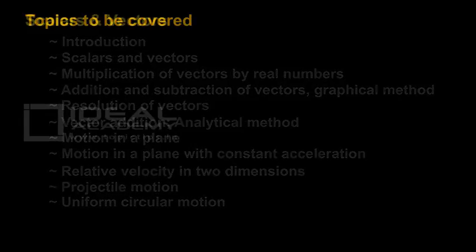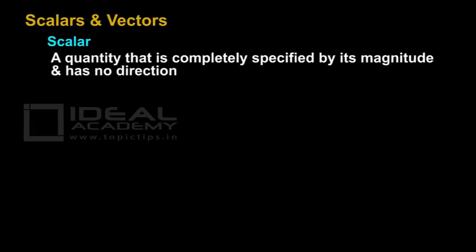Let us start the chapter with the knowledge of scalars and vectors. What do you mean by a scalar and a vector quantity? A scalar quantity is a quantity that is completely specified by its magnitude and has no direction. It has nothing to do with direction — a scalar quantity has only magnitude, no direction.